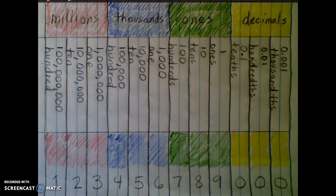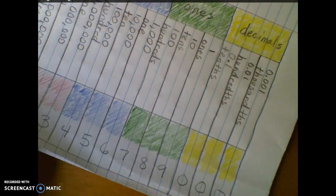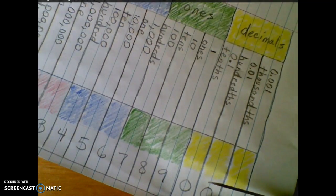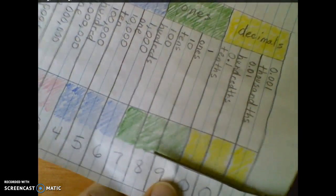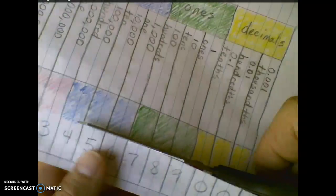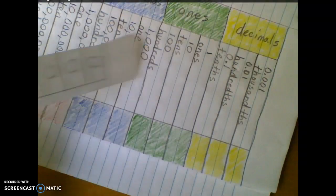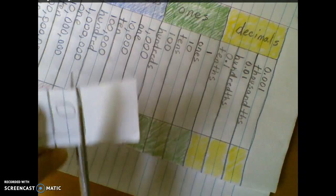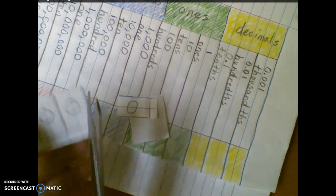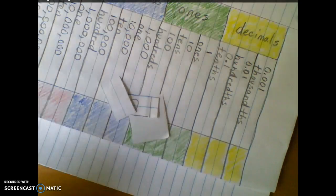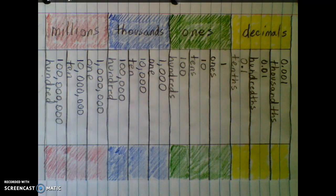Our first activity with our place value chart will be to play Name That Place and Name That Number. To do that we're going to have to cut out our numbers. Take a moment — you'll need scissors — and cut your numbers into small rectangular, sortable, arrangeable pieces. Now that my numbers are cut out, I have them laid out in front of me so that I can get them and place them into the squares.